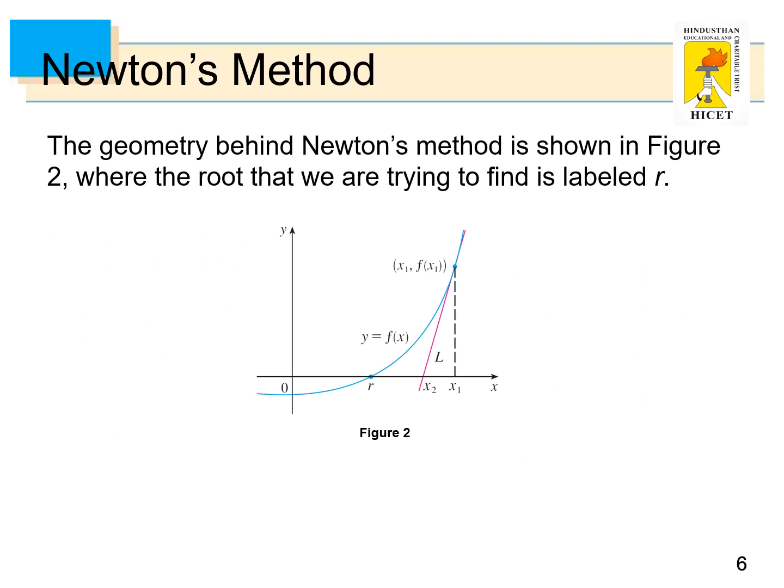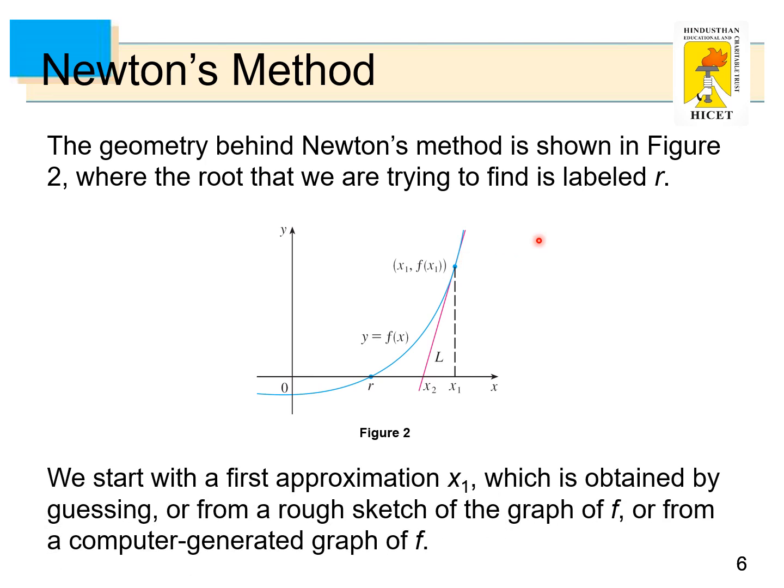The geometry behind Newton's method is shown in figure 2, where the root that we are trying to find is labeled r. We start with our first approximation x1, which is obtained by guessing or from a rough sketch of the graph of f or from a computer-generated graph of f.